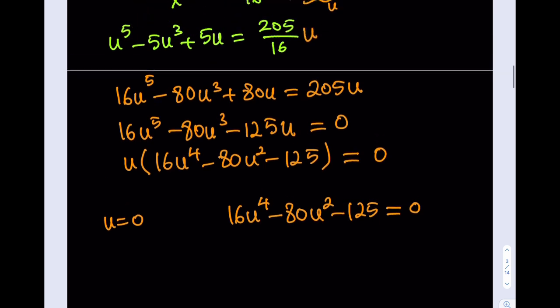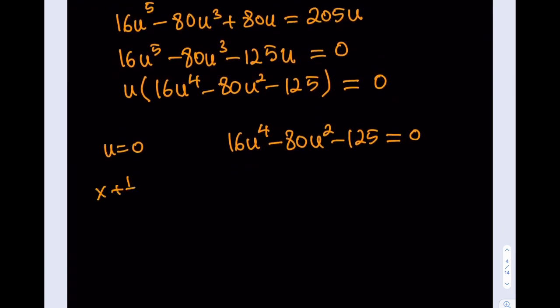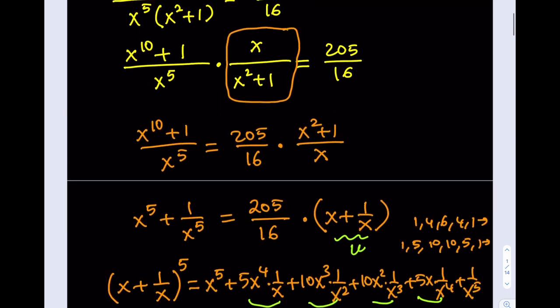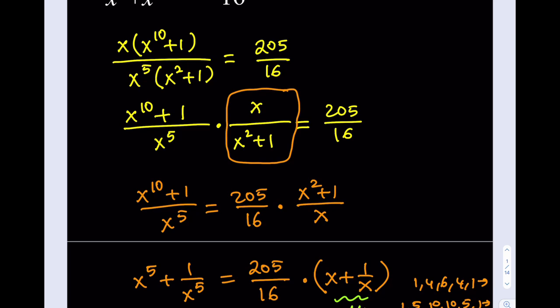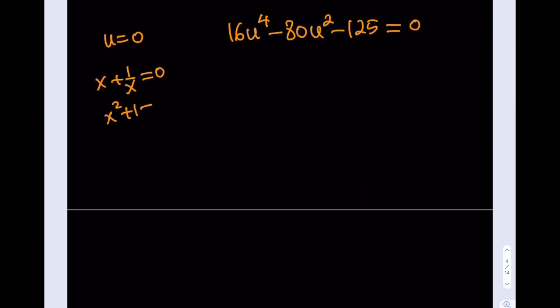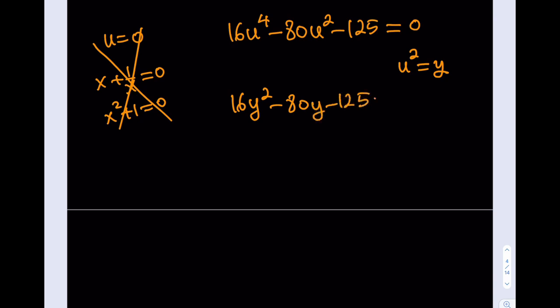Can u equal 0? u equals x plus 1 over x. If x plus 1 over x equals 0, that means x squared plus 1 equals 0, which means x is not real. Since we're looking for real solutions, u equals 0 is not valid. So we only need to solve 16u to the 4th minus 80u squared minus 125 equals 0. This is a quartic, but a special type. We can use the substitution y equals u squared, giving 16y squared minus 80y minus 125 equals 0.